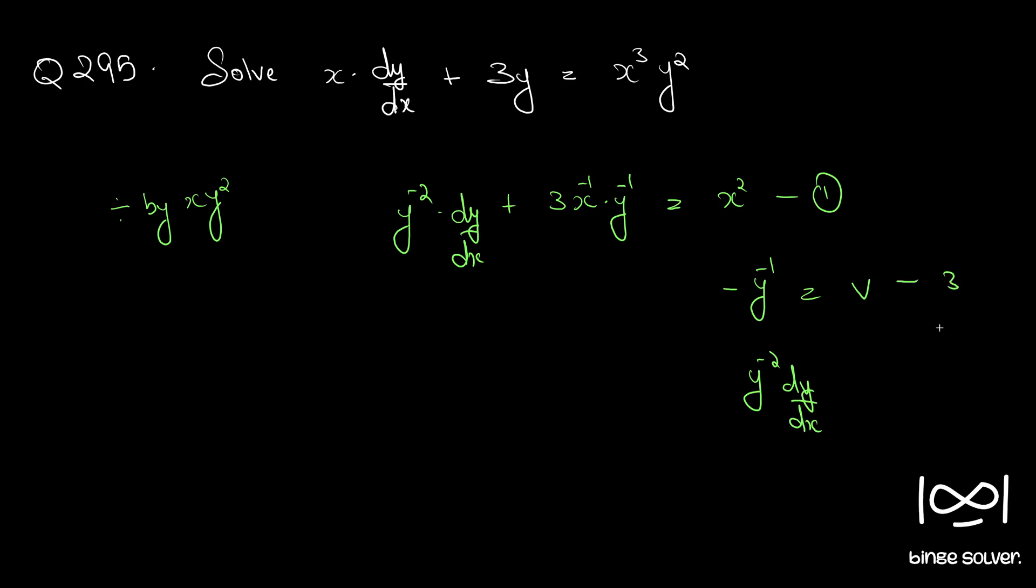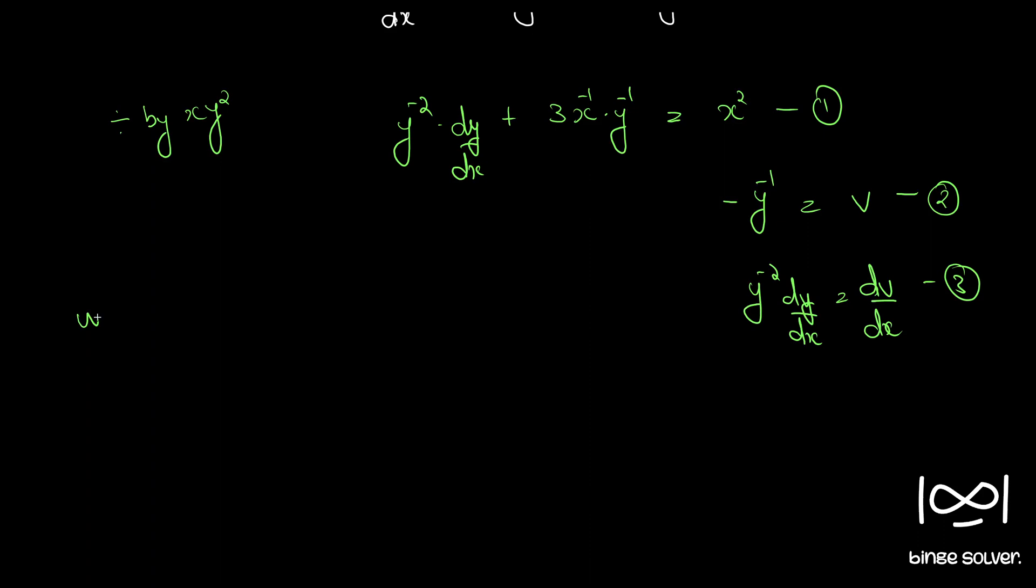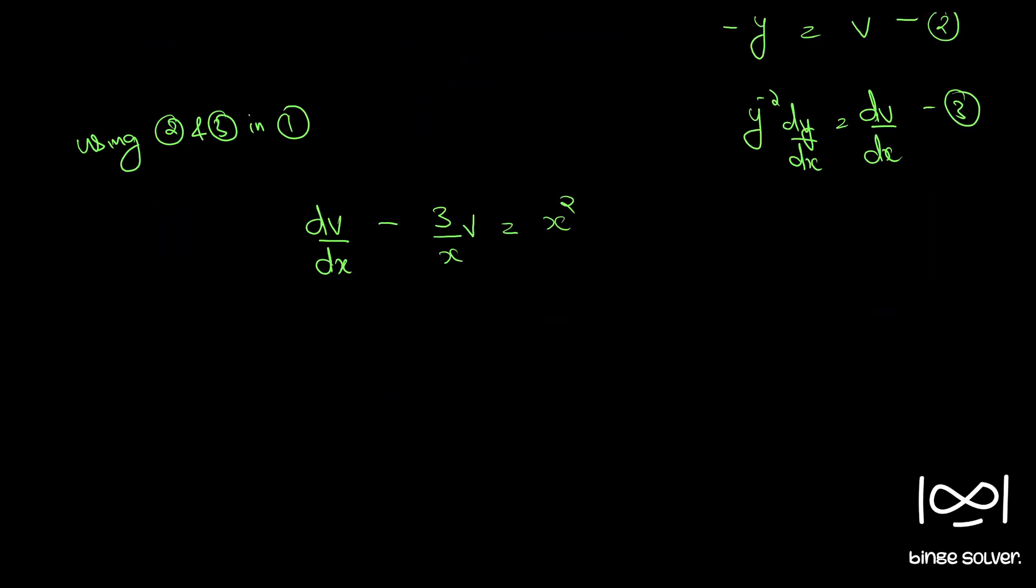When you differentiate this equation with respect to x, let's call this equation 3. So using 2 and 3 in 1, we have dv/dx - 3/x·v = x². Now this is in the standard linear differential equation form.